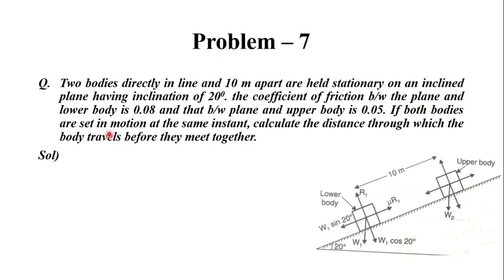If both bodies are set in motion at the same instant, calculate the distance through which the body travels before they meet together. The lower body is in front and the upper body is behind. Let the lower body weight be W and the upper body weight be W.